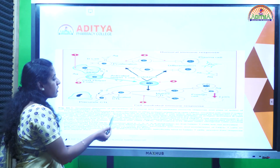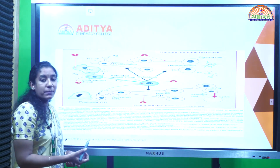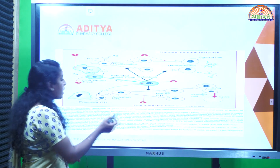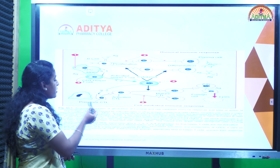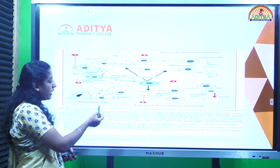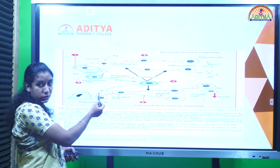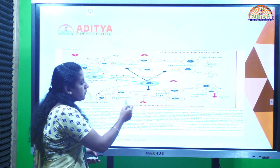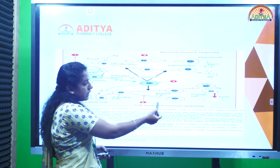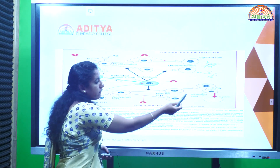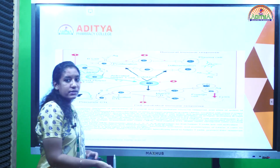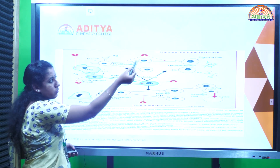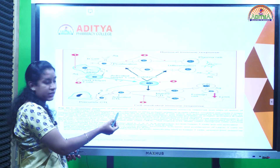Coming to cell-mediated immune responses, these are mediated by T cells, whereas humoral immune responses are mediated by B cells. There is a precursor cytotoxic T lymphocyte that is activated in the presence of interleukin-2, matures into a mature cytotoxic T lymphocyte, which then identifies the antigen and undergoes lysis. That is the mechanism for both humoral and cell-mediated immune responses.